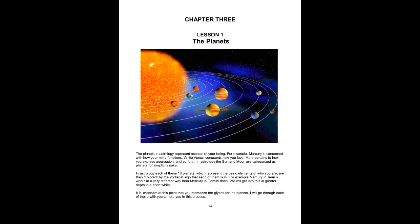Chapter 3, Lesson 1: The Planets. The planets in astrology represent aspects of your being. For example, Mercury is concerned with how your mind functions, while Venus represents how you love, and Mars pertains to how you express aggression and so forth.